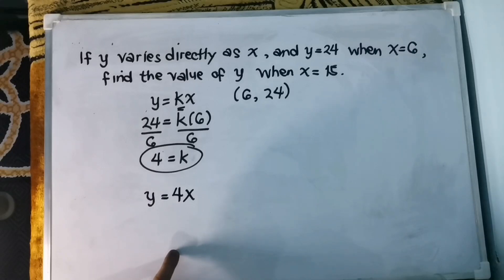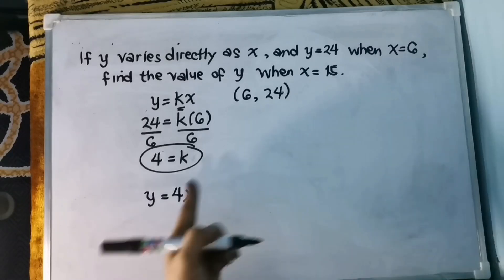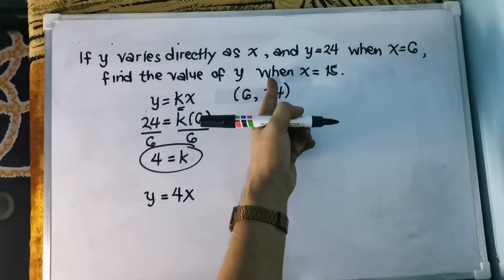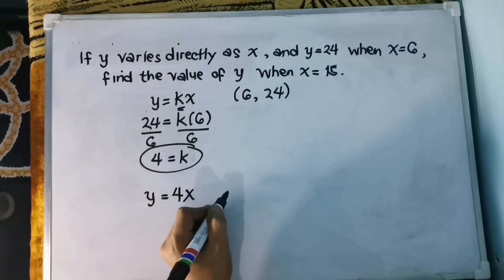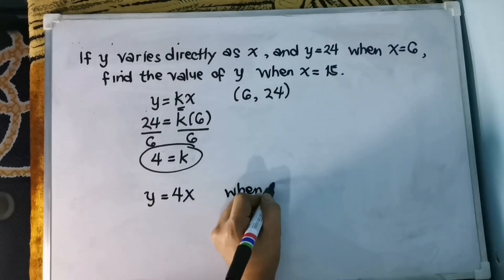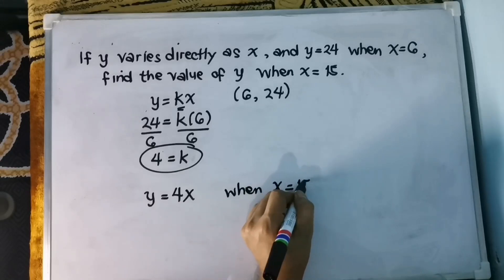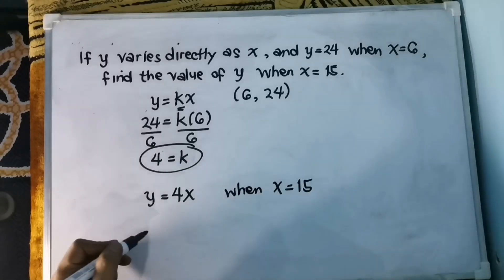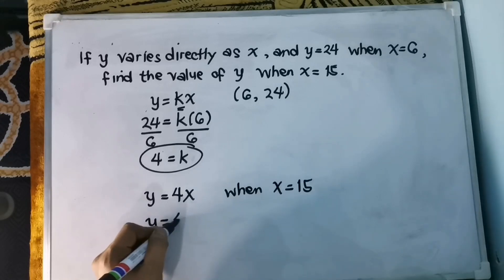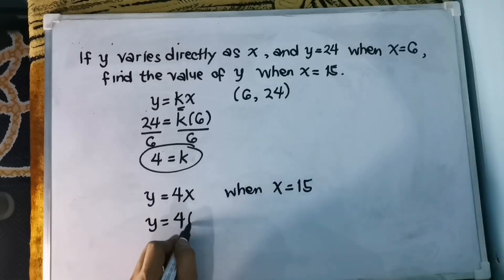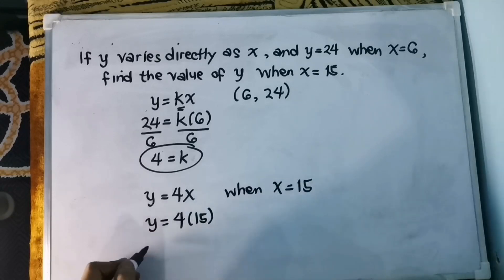We are asked to find the value of y. Simply substitute the value of x, which is 15. When x equals 15, just substitute here to find the value of y equals 4, then your x is 15. Then y equals 4 times 15 is 60.